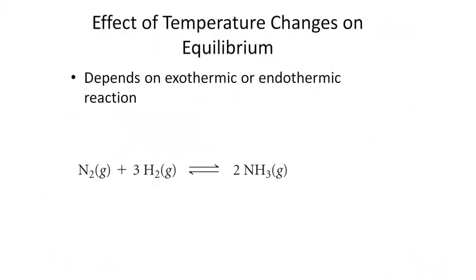We can also disturb an equilibrium system by raising or lowering the temperature. Remember that our equilibrium constant K is specific to temperature — if you change the temperature, you change the equilibrium constant, and the system then shifts in response to this new value of K. How the system shifts depends upon whether the reaction is exothermic or endothermic. Exothermic reactions release energy and endothermic reactions absorb energy. We can write heat as a product or a reactant for these two different types of reactions, and this helps us use Le Chatelier's Principle to predict the effect of temperature changes.